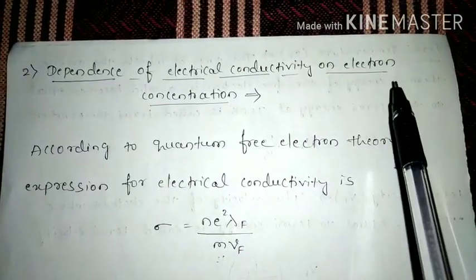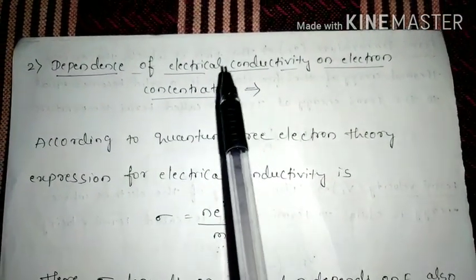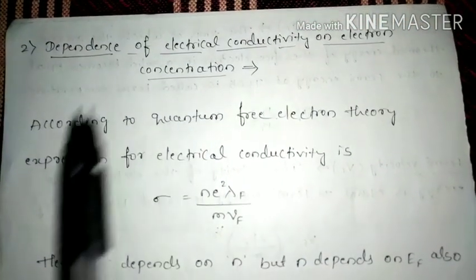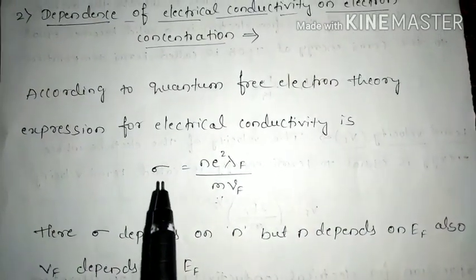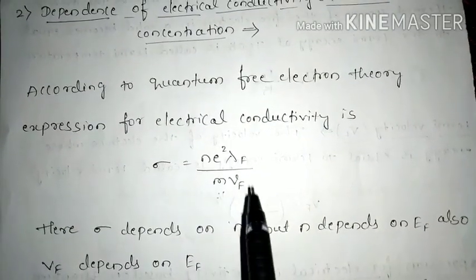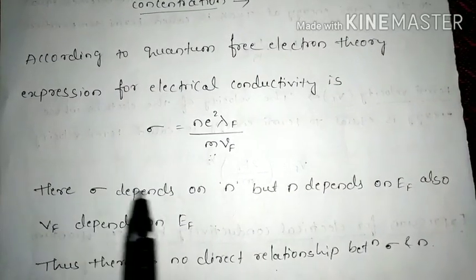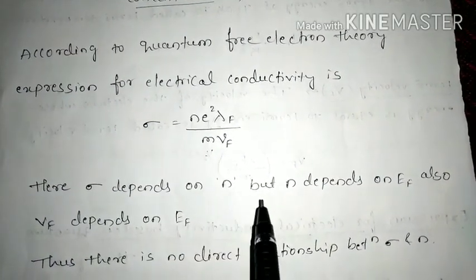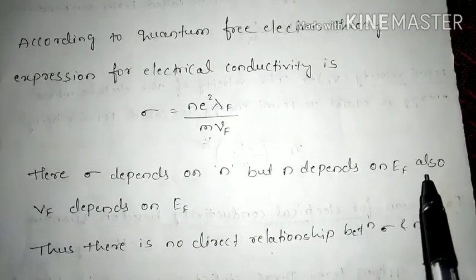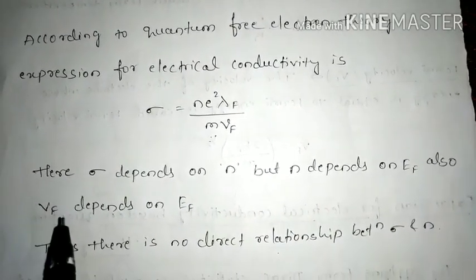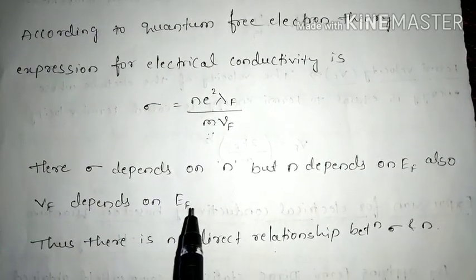The second merit concerns the dependence of electrical conductivity on electron concentration. According to quantum free electron theory, σ = ne²λf / (m · Vf). Here, σ depends on n, but n itself depends on Ef (Fermi energy). Also, Vf, the velocity of Fermi electrons, depends on Ef as well.